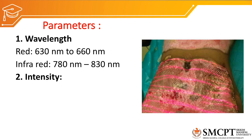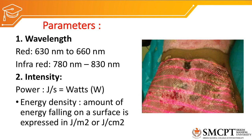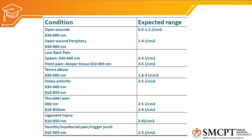The second parameter is intensity. Power is joules per second, also called watts, and energy density is the amount of energy falling on a surface, expressed in joules per meter square or joules per centimeter square. The intensity of laser used for treating wounds, low back pain, tendinitis, bursitis, etc., should be given in joules per centimeter square or joules per meter square.